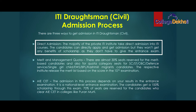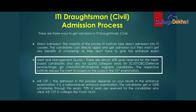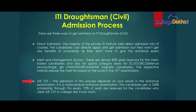Under direct admission, candidates can directly apply and get admission but won't get scholarship benefits as they don't give an entrance exam. Under merit and management quota, there are almost 30 percent seats reserved for merit-based candidates and also quota category seats for ST, SC, OBC, defense service, single girl child, EWS, BPL, and Kashmiri migrants candidates. The respective institutes release the merit list based on the score in the 10th examination.